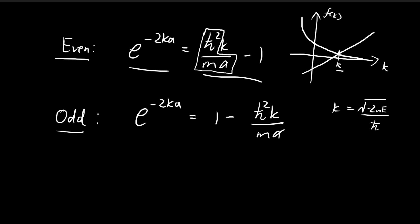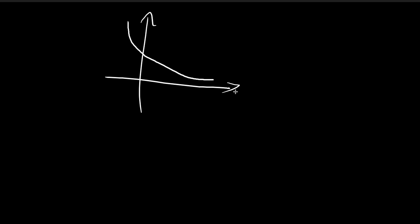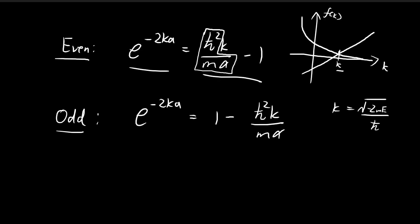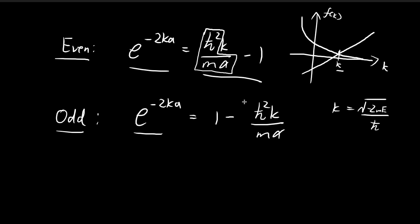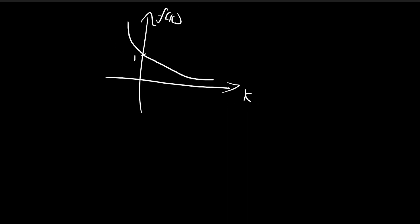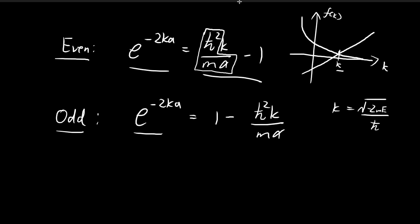For the case of an odd function, the situation is not as simple. Graphing again: e to the power of negative 2ka passes through (0, 1), and the linear function also intersects at f(k) = 1 when k = 0, since e to the 0 is 1. The linear function has a negative slope. Depending on how steep this linear graph is, there may or may not be a meaningful intersection at a positive k value — and that k would be the solution.